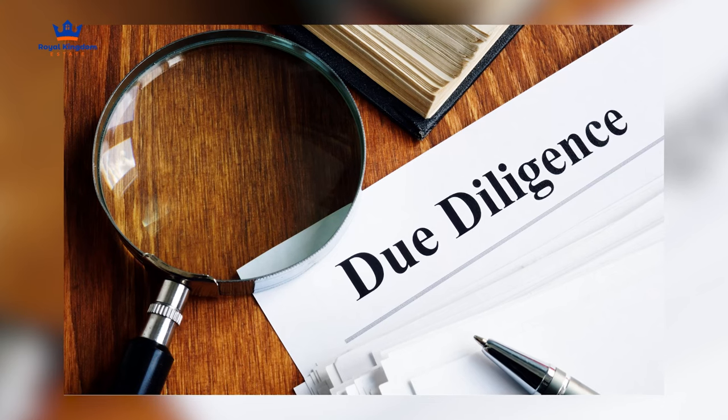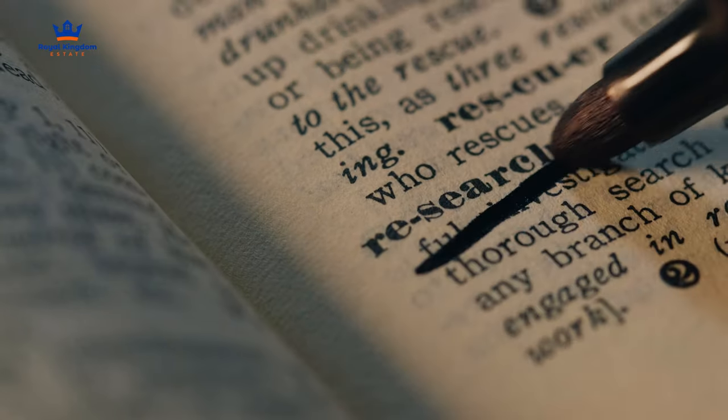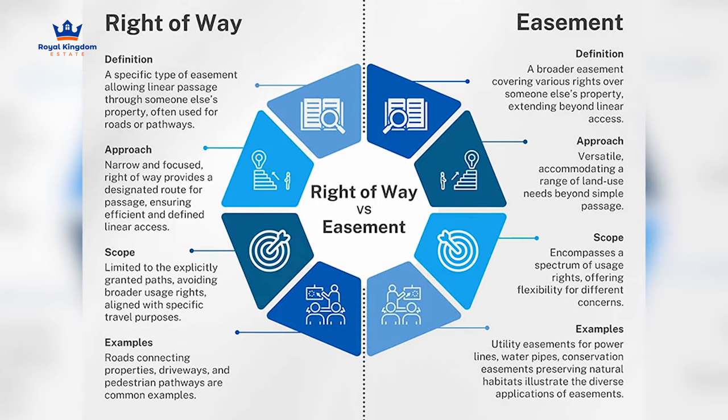How can one look out for these factors when acquiring property? It comes down to due diligence. One key thing is doing research on property records, because you need to establish that there is no easement or right of way on the property. Easement simply means a legally binding agreement that the land is available for government projects in the near future — so the government can step in and use it for public use.